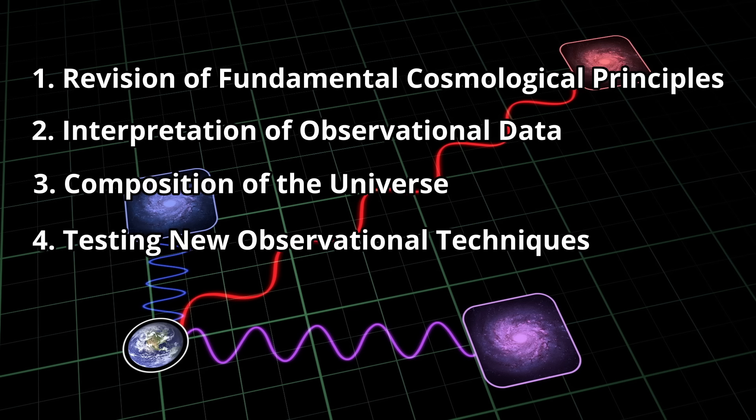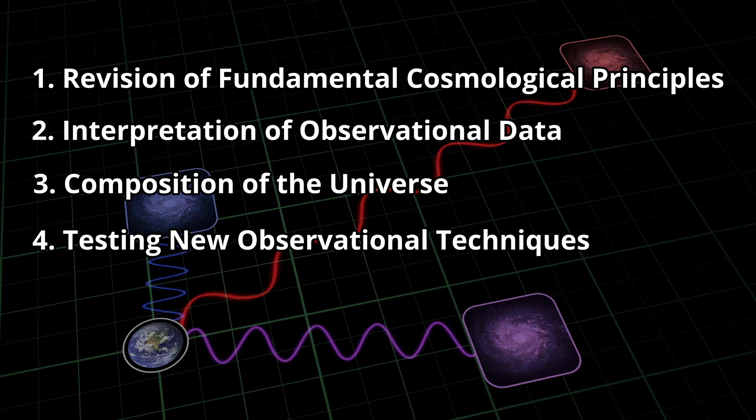4. Testing New Observational Techniques. The model opens avenues for testing new observational techniques that can discern between its predictions and those of standard cosmological models. For example, proposed methods for the detection of redshift drift and variations in coupling constants could provide direct empirical tests of the model's predictions and help distinguish it from alternative theories.